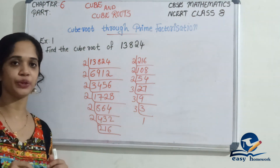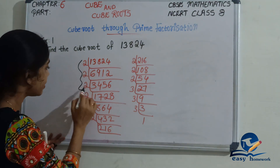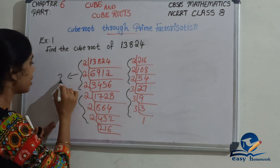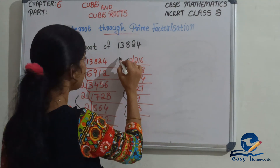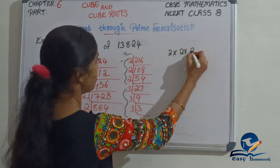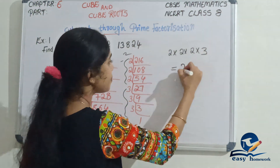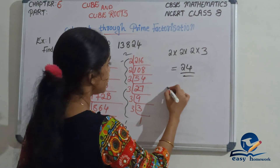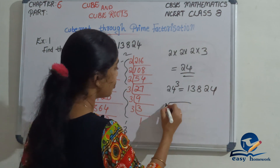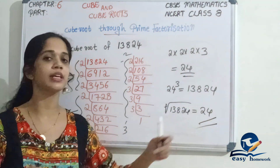Now we will do the prime factorization method again. Let's take a group of prime factors. Taking a group: 2 times 2 times 2, then 3. So 2 times 2 is 4, times 2 is 8, times 3 is 24. So 24 cubed is 13,824. The cube root of 13,824 is 24.